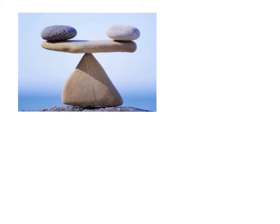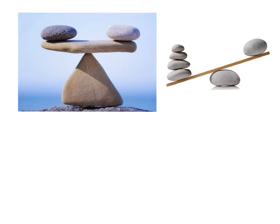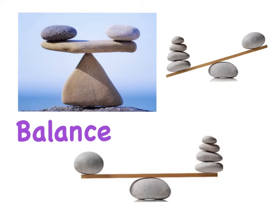In today's lesson we bring algebra one step further. Previously we've looked at multiplying out algebra and simplifying algebra. Today we bring in a very important symbol: the equal symbol. When we bring in the equal symbol, it's really important to note that this is all about balance. Sometimes you take away something and it becomes unbalanced. In order to get something to balance, you need to do the same to both sides.